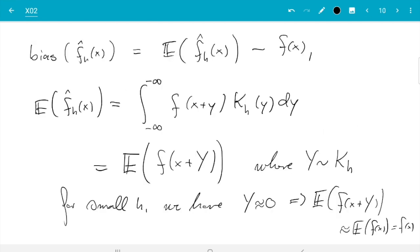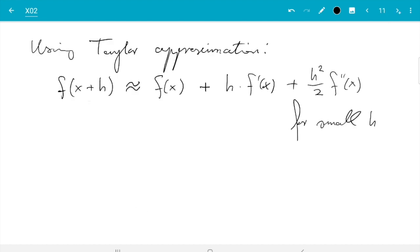But I want to plug this into the equation we just had here. So expectation of f(x+Y). That's what we had as part of computing the bias. That is now approximately equal to expectation of f(x) plus, and now the role of the step size which normally is called h, we cannot call h here because that's our bandwidth, instead it is Y. So we have Y times f'(x) plus Y squared over two f''(x).